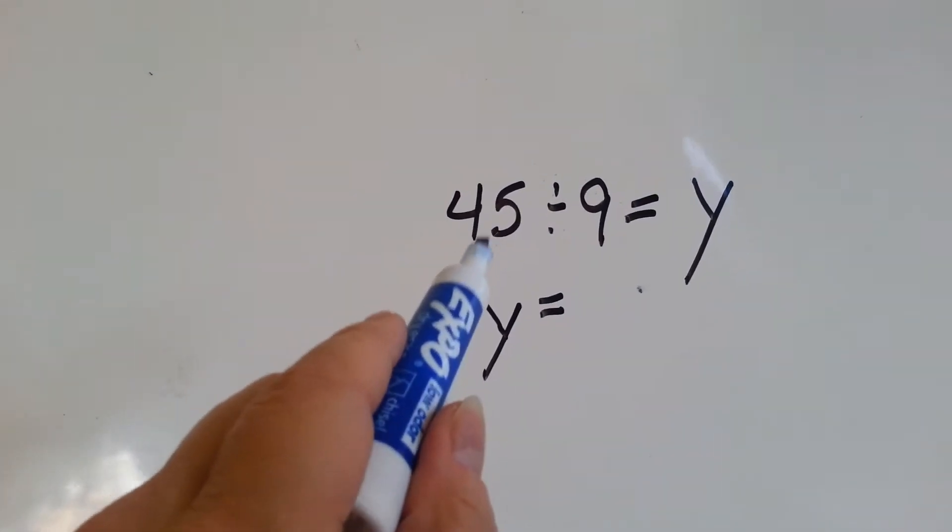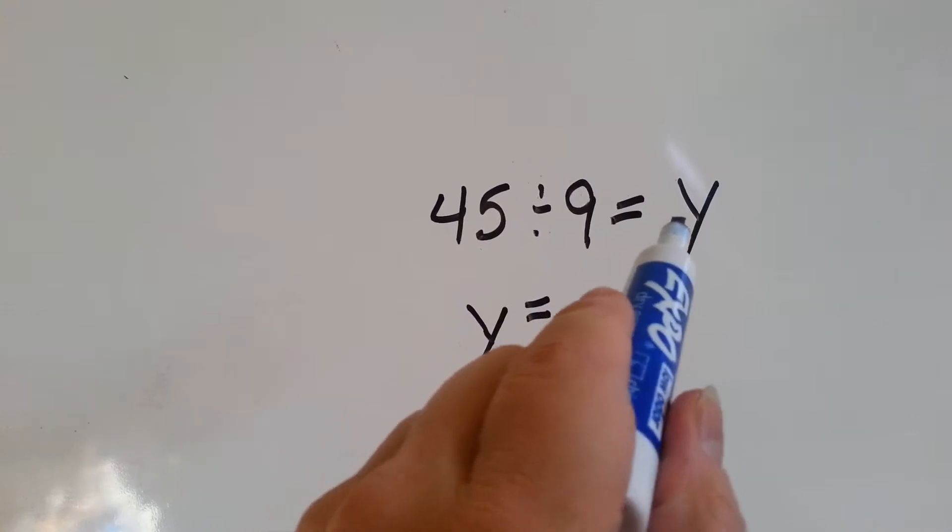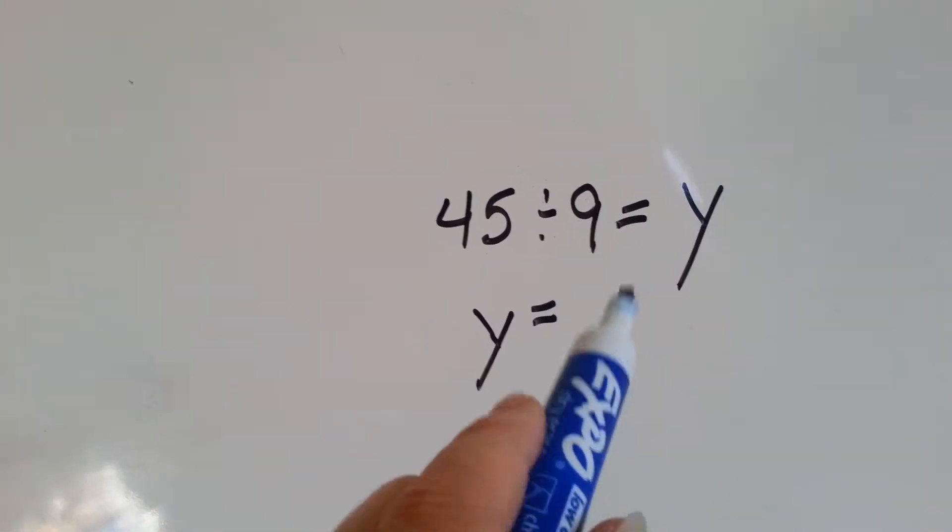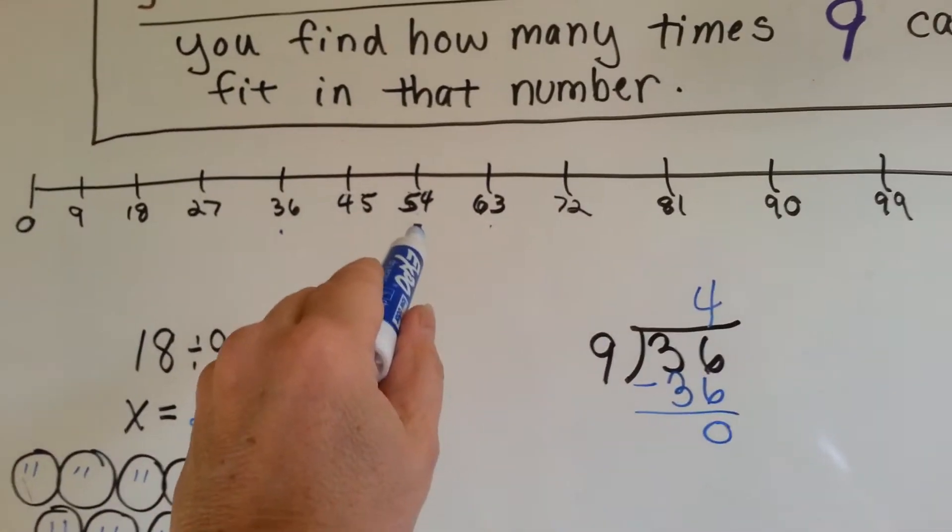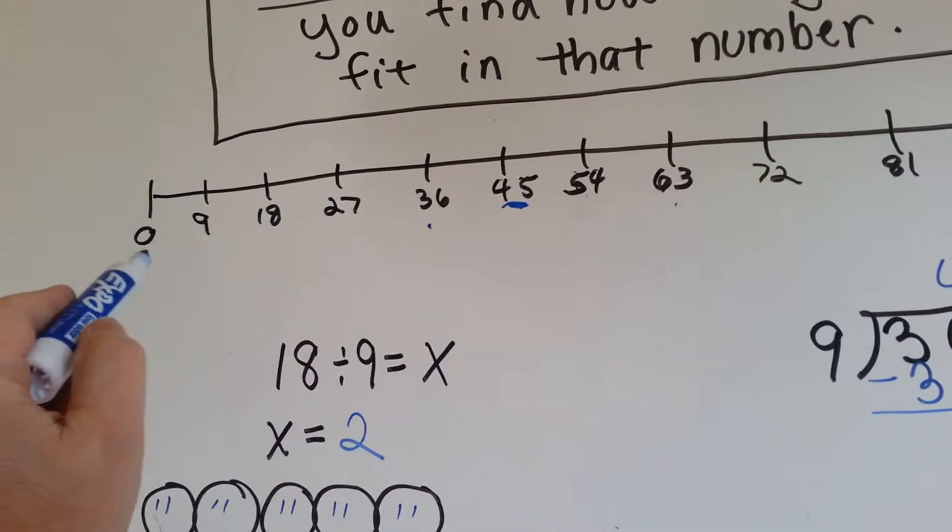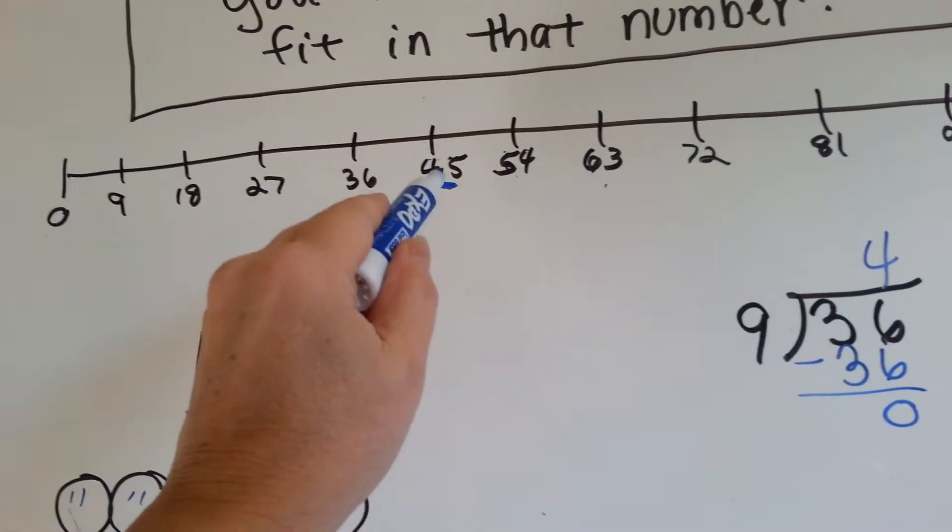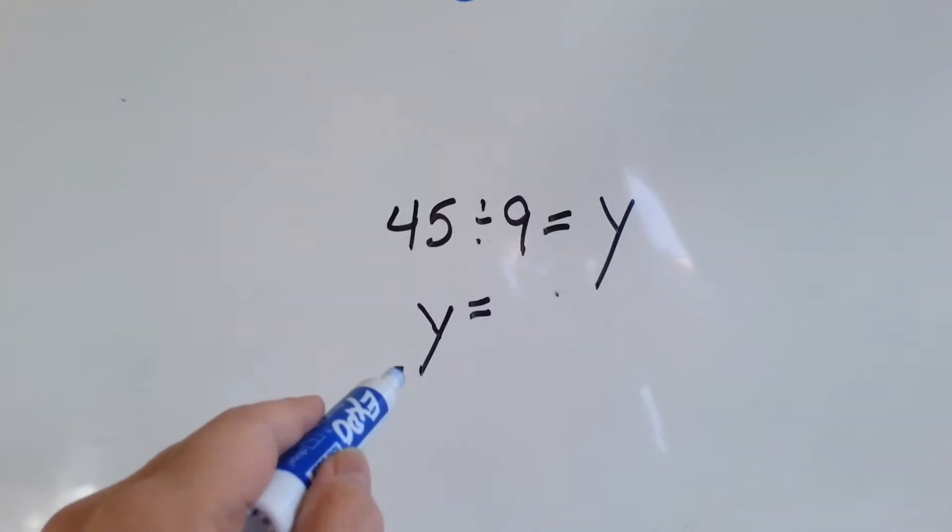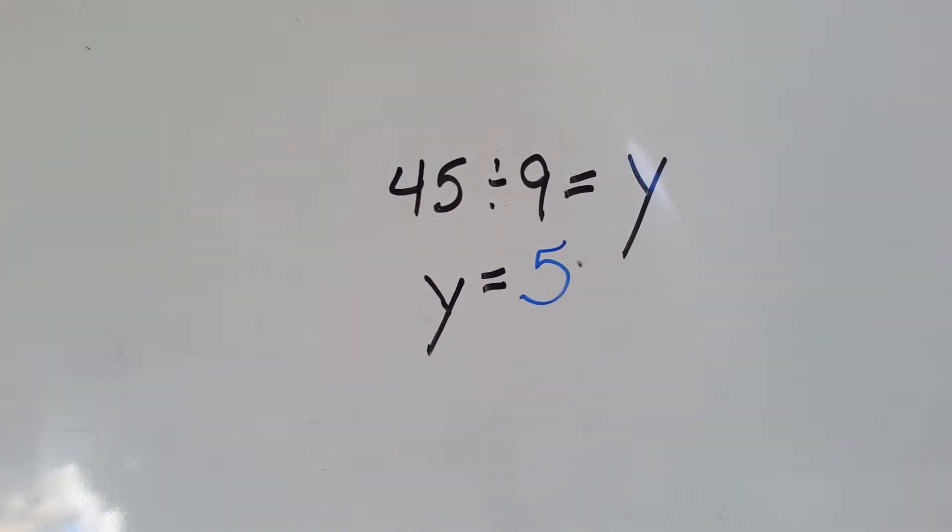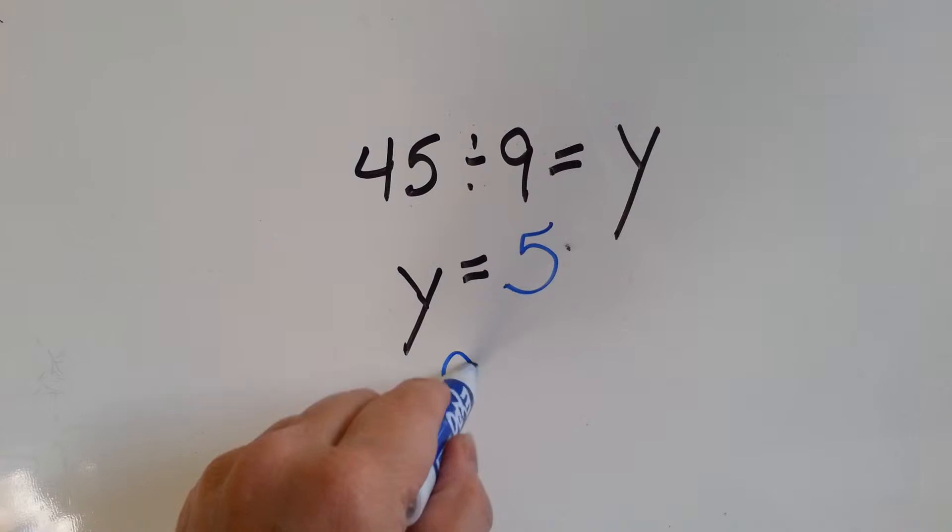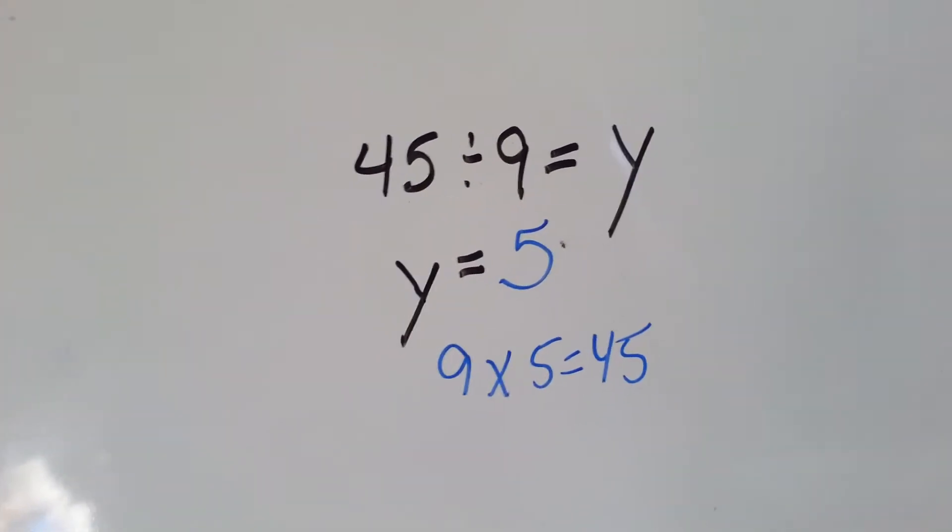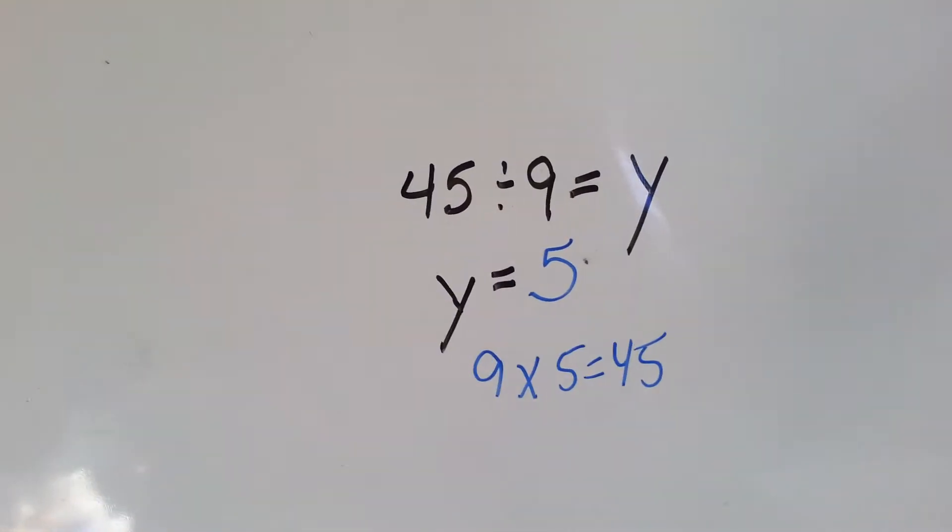Let's try this one. 45 divided by 9 equals y. y equals what? Where's 45? It's right here. Let's skip count and find out. 1, 2, 3, 4, 5. Y equals 5. Because 9 times 5 equals 45. See that? That's the inverse. The opposite of division is multiplication.